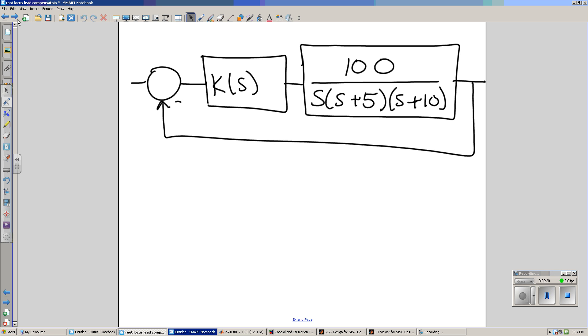So the problem here is design a feedback system with a compensator K of S to give a desired overshoot as well as speed up the system. The presumption is that it's already a type 1 system, so I have no error for step input. I just want to get a quicker system.